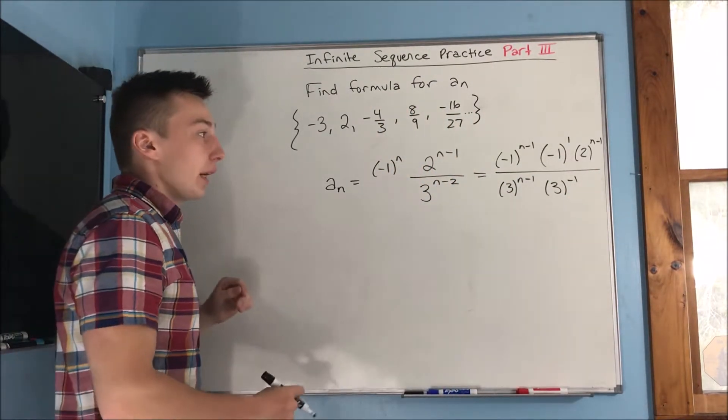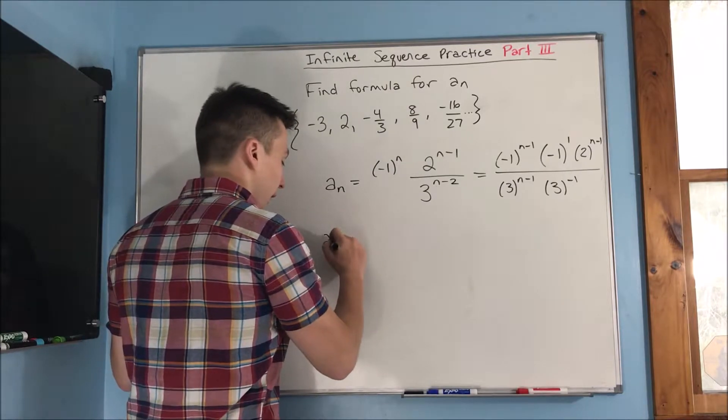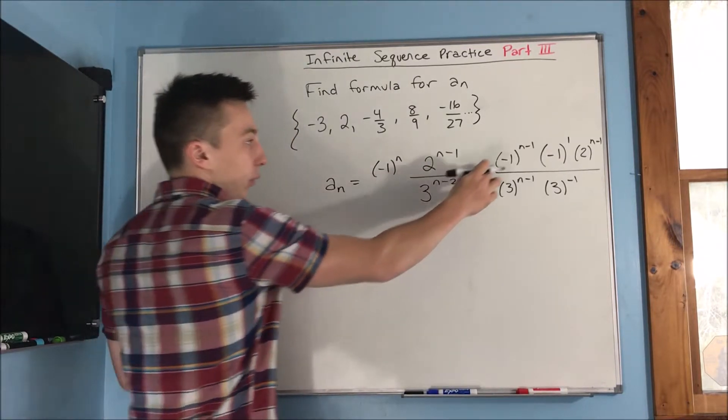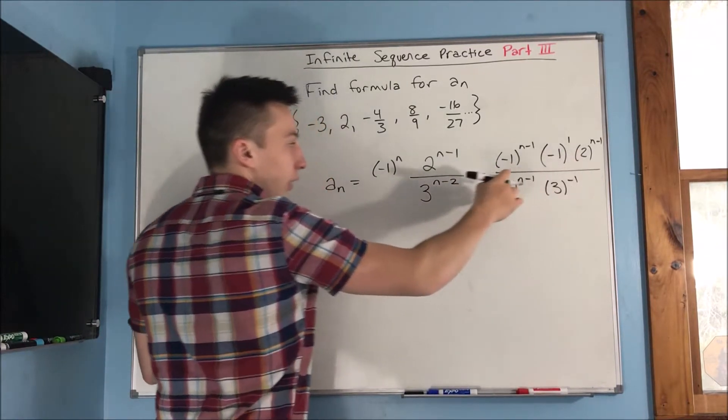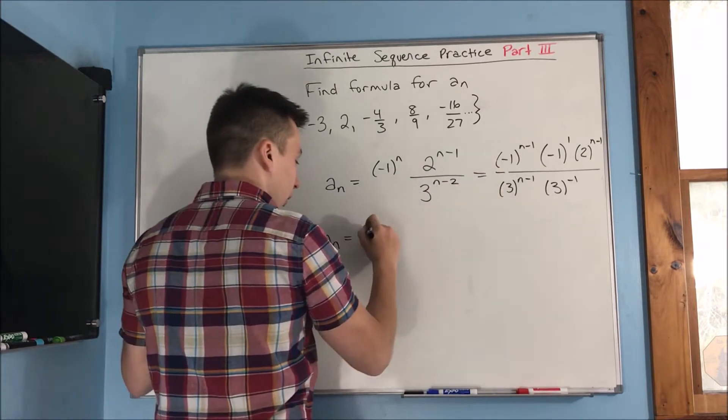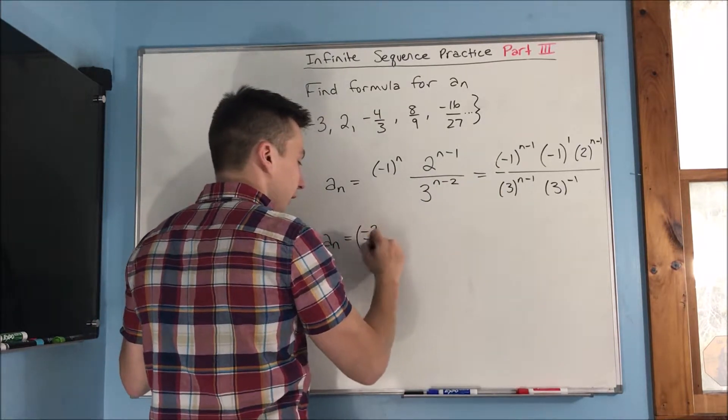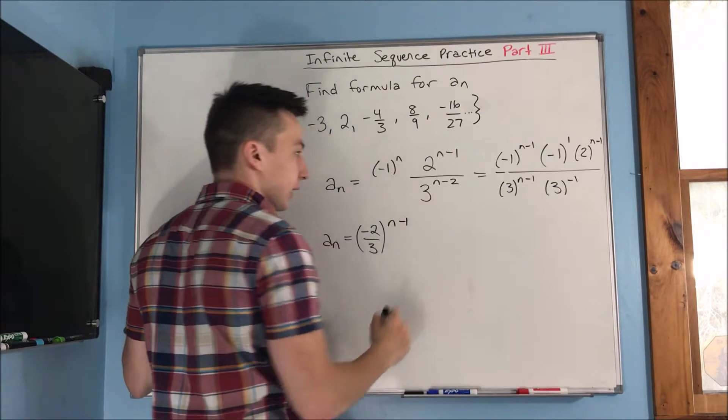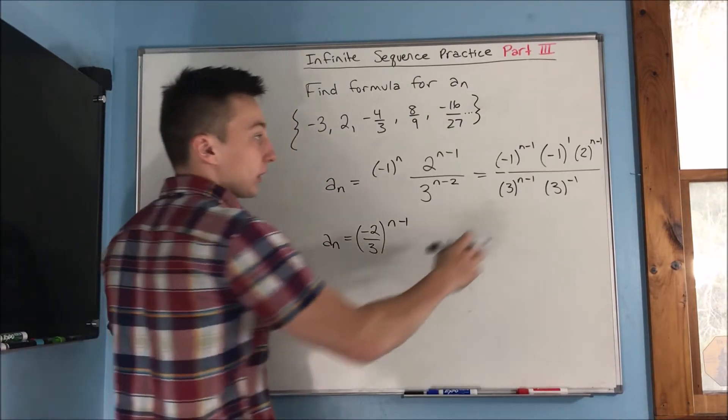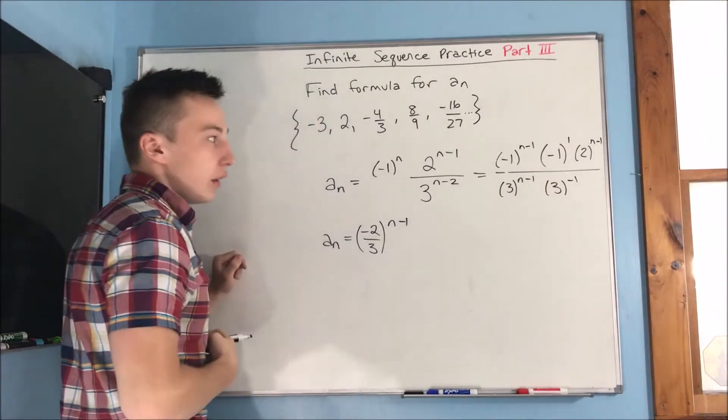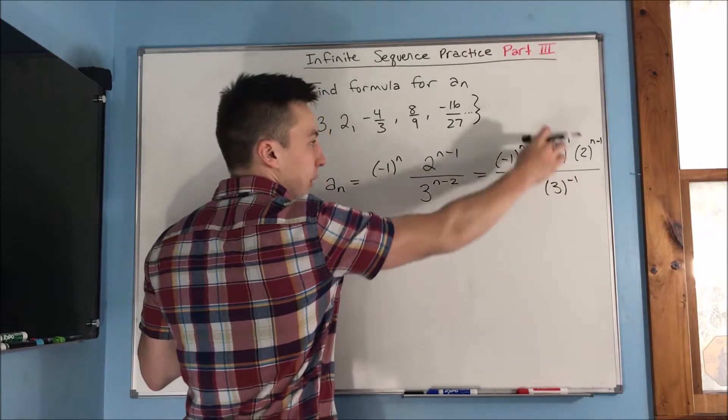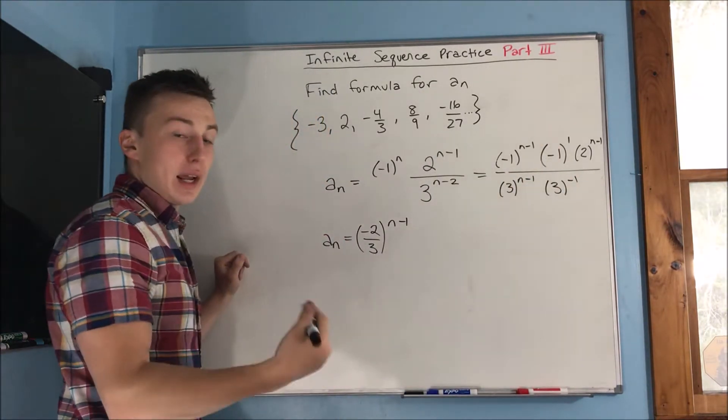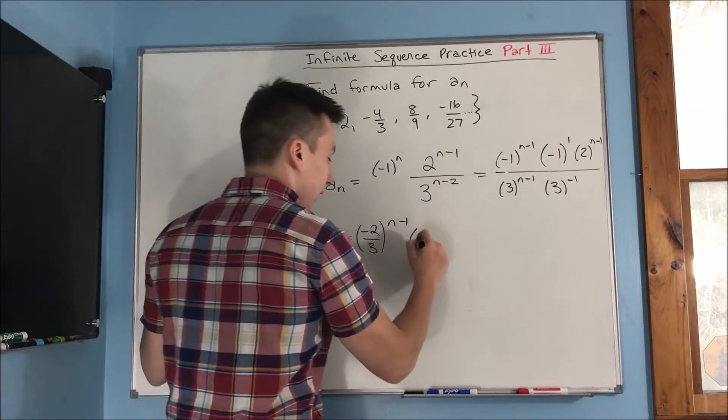So now we can just combine those n minus one exponents to get a, well, it's going to be a negative one times two. That's a negative two over, going to be over three here. So we get a negative two over three to the n minus one. And what's left, we have a negative one here. And that three is going to get pushed up to the numerator because it's to the negative one power. So we're going to end up with a negative three out front.